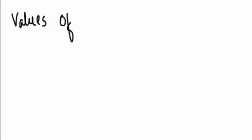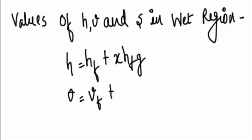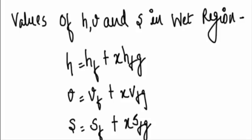For the values of enthalpy, volume and entropy in the wet region we have these formulas: H is equal to HF plus X HFG. V is equal to VF plus X VFG. S is equal to SF plus X SFG.